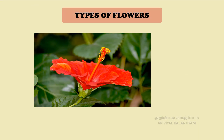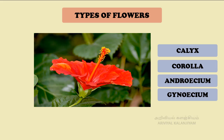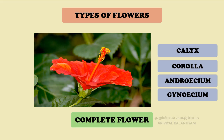Types of flowers. Now we shall learn some important terms to understand flowers and their role in reproduction. If all the four whorls — calyx, corolla, androecium, and gynoecium — are present, then it is called a complete flower.